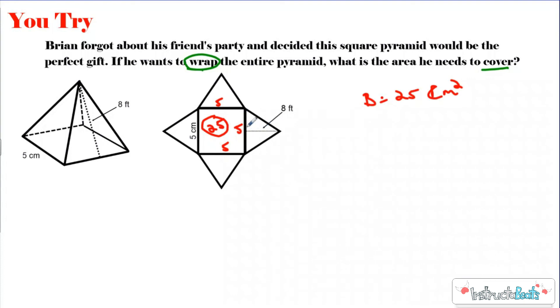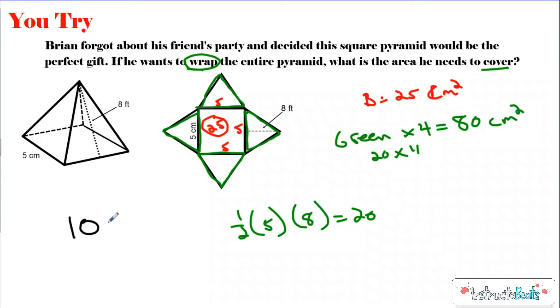I know that the area of my base is going to be 25 square centimeters. And because all the bases are the same and all the heights are the same, all these triangles are going to be the exact same. If I find the area of one of them, I could just multiply that by 4, and that would give me my four lateral faces. I'm going to just say green and multiply this by 4. 1/2 times 5 times 8 is going to give us 20. If I multiply 20 times 4, all my lateral faces together had an area of 80 centimeters squared. When I add that together, I get a total surface area for this pyramid of 105 centimeters squared.